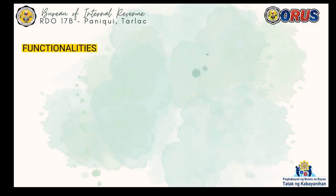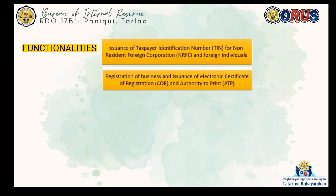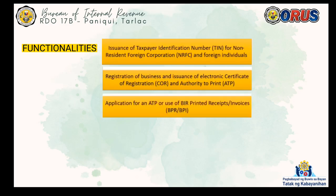The functionalities of the Online Registration and Update System include: issuance of Taxpayer Identification Numbers for non-resident foreign corporations and foreign individuals; registration of business and issuance of the electronic Certificate of Registration and Authority to Print; and application for an ATP or use of BIR Printed Receipts or Invoices (BPR/BPI).